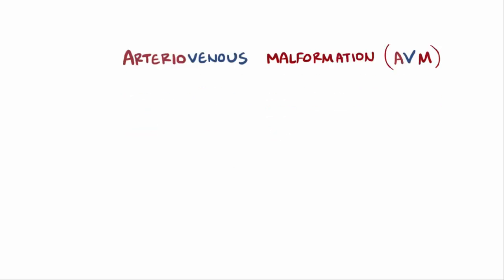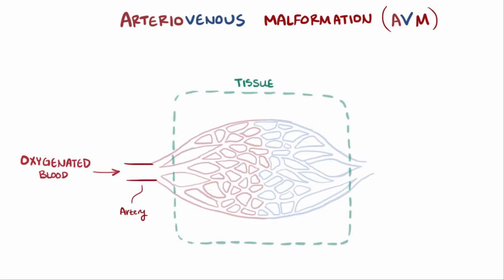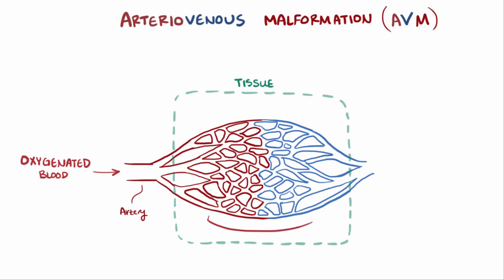Typically, oxygen-rich blood is carried to the body's tissues via arteries. Large arteries split into smaller and smaller arteries and feed into capillary beds, where cells exchange oxygen for carbon dioxide. The capillaries then feed into larger and larger veins, which carry deoxygenated blood away from the tissues.